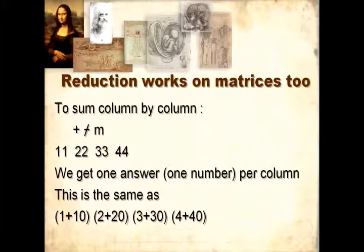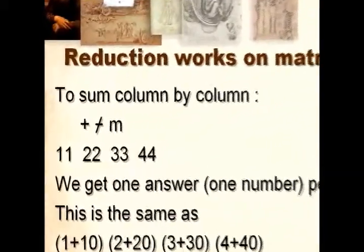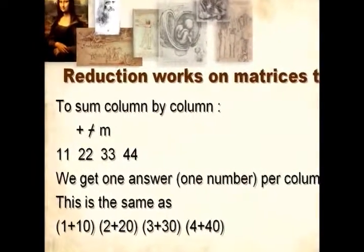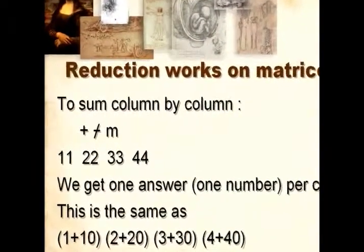To sum column by column, we use slash bar. The little bar in the slash shows which dimension we're trying to apply the function to. Without a bar, we're applying on the rows. With a bar, we're applying on the columns.